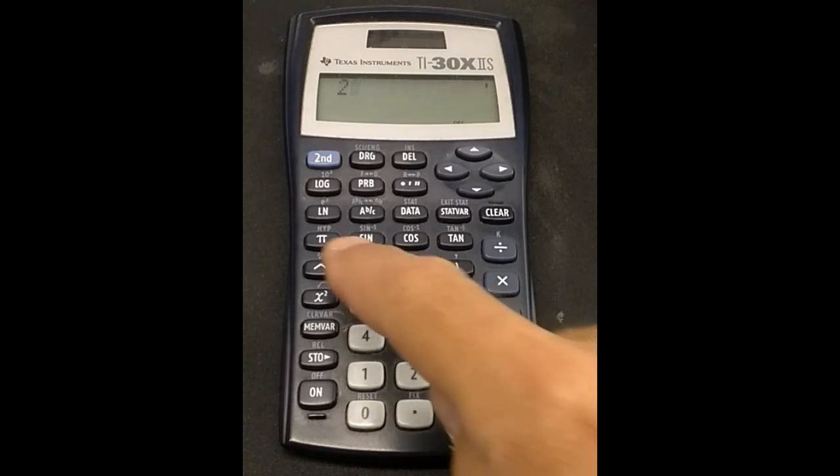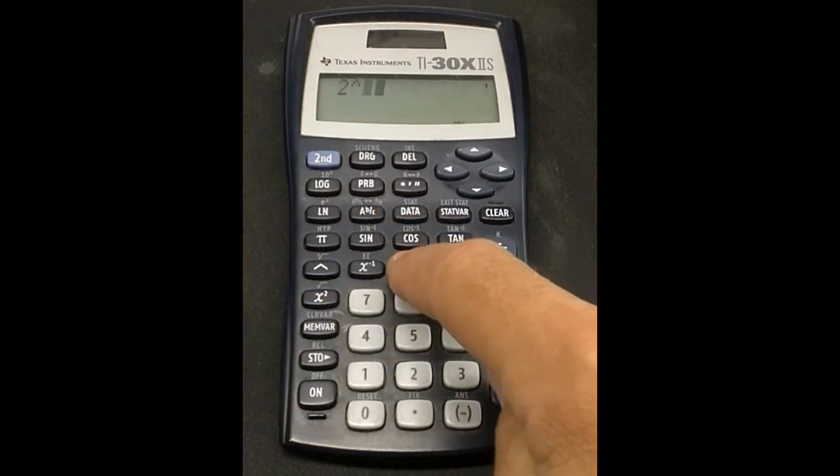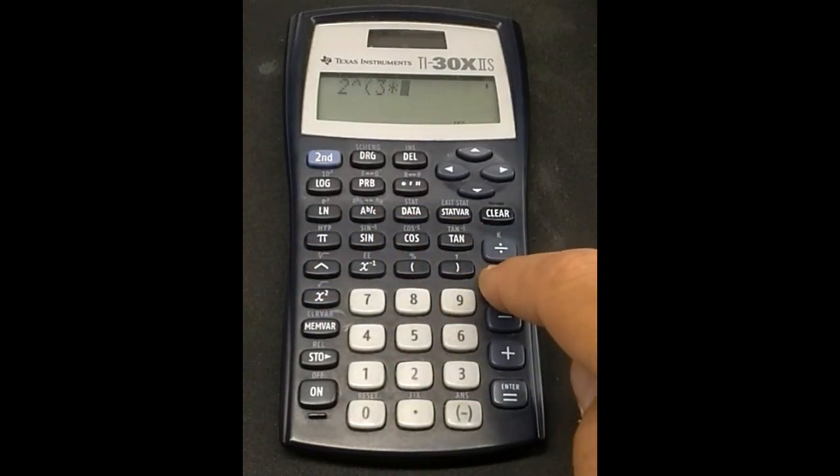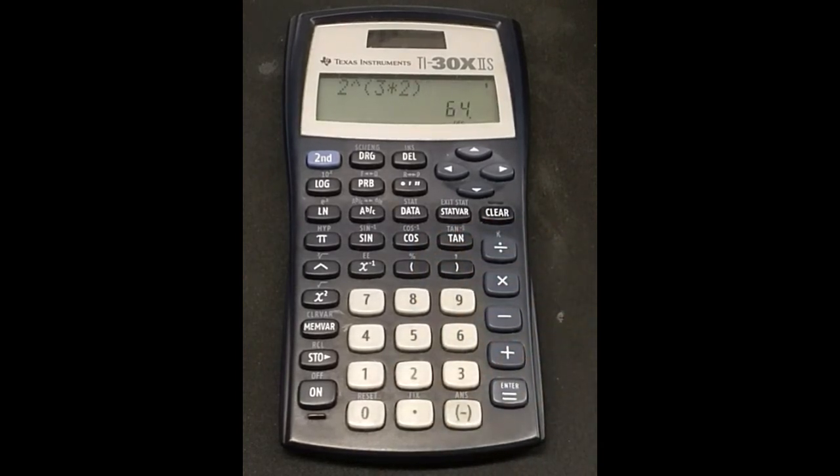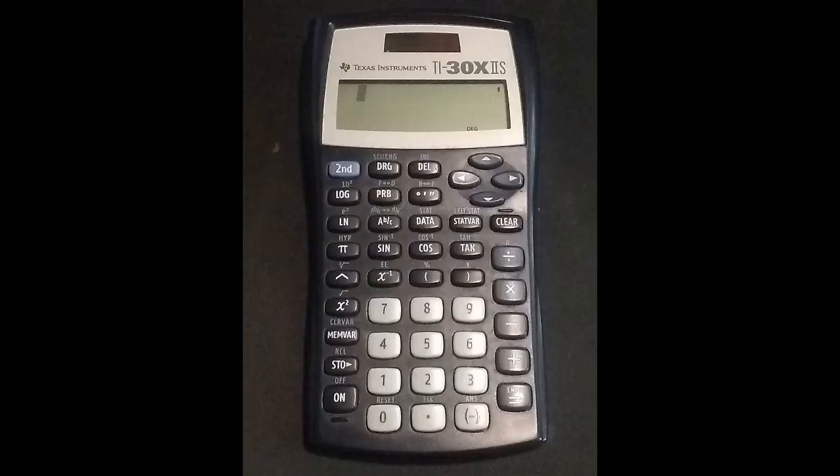Let's try that on the calculator. That's 2 raised to the parentheses 3 times 2, close parentheses, equals, and it is indeed 64.